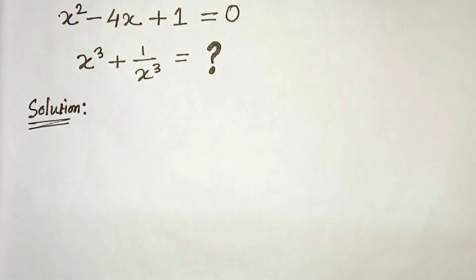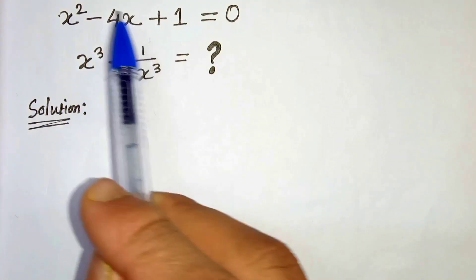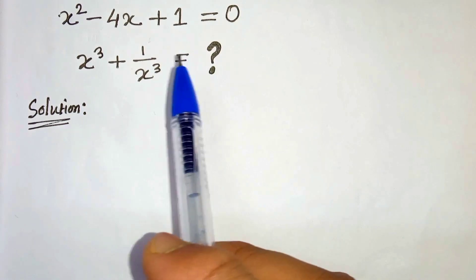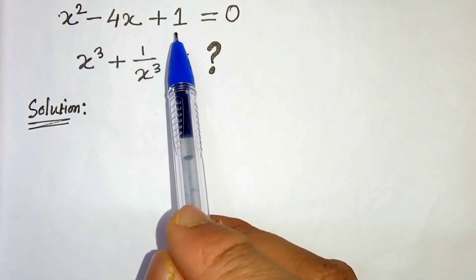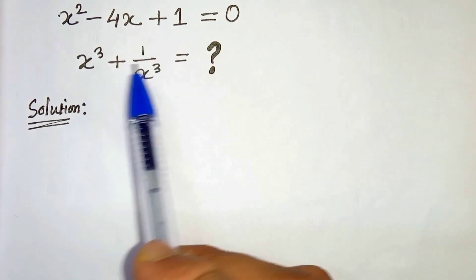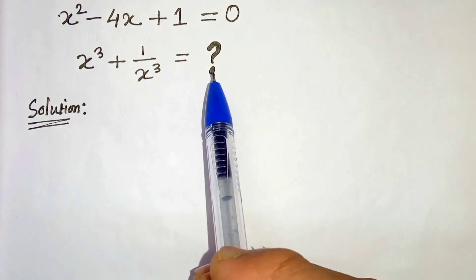Hello everyone. In this video we will try to solve this algebraic problem. The question is: x squared minus 4x plus 1 equals 0. Find x cubed plus 1 over x cubed.